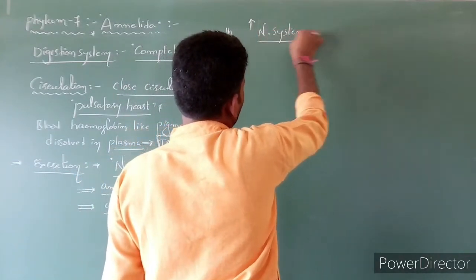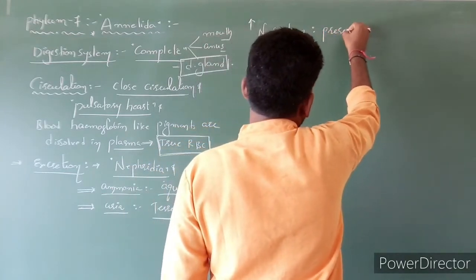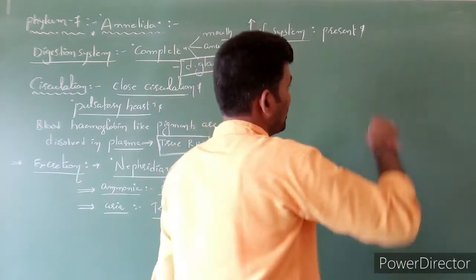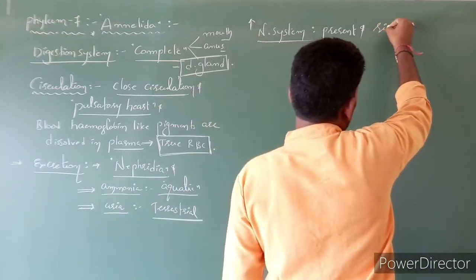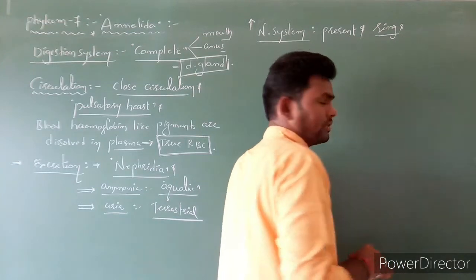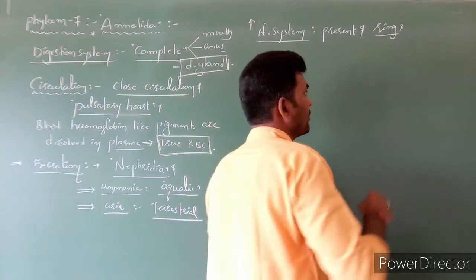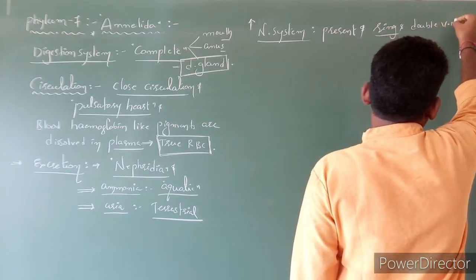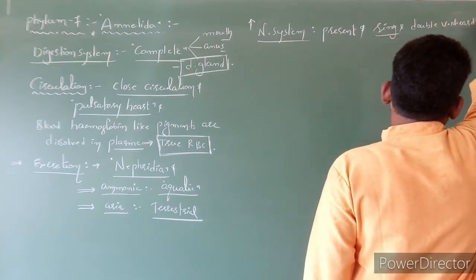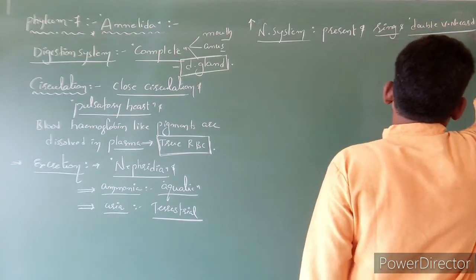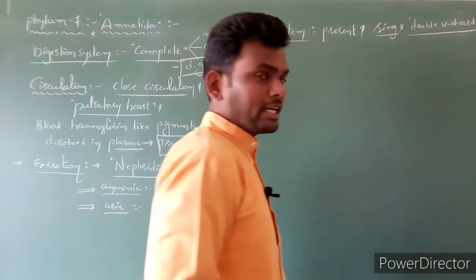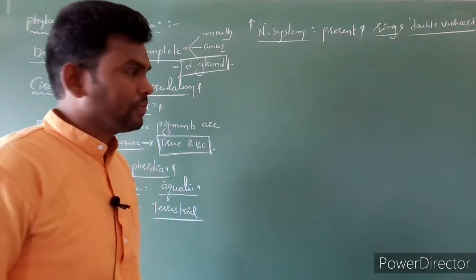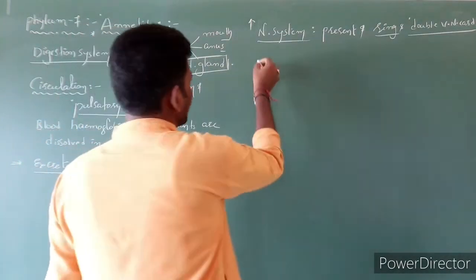Regarding the nervous system, ring-like nerves are present and a double ventral nerve cord can be noticed in Annelida members.